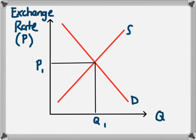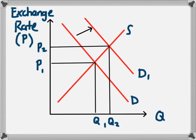If there is an increase in the demand for that currency, we'll have a shift in the demand curve from D to D1, and that will lead to a new equilibrium. So in this example, there's been an increase in demand from D to D1, and that's led to an appreciation of the currency. The exchange rate has increased from P1 to P2.